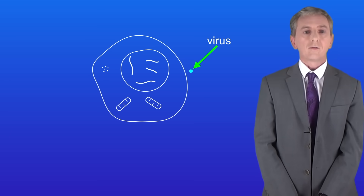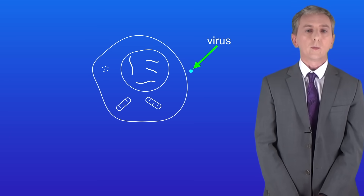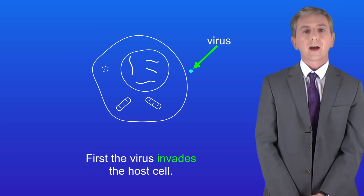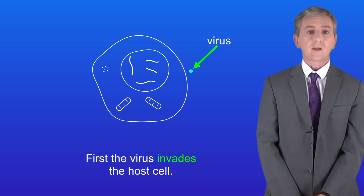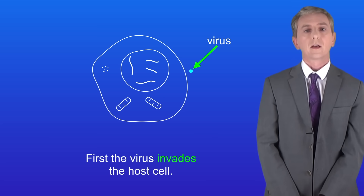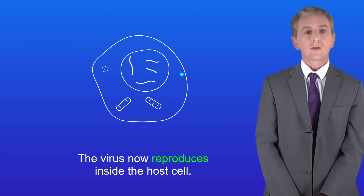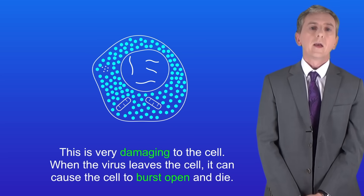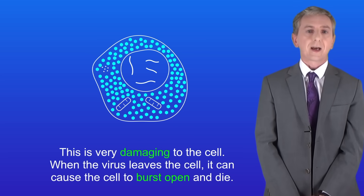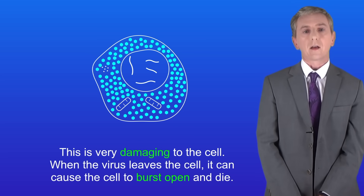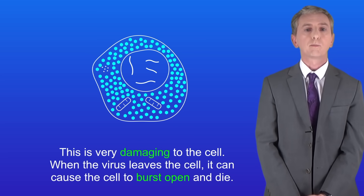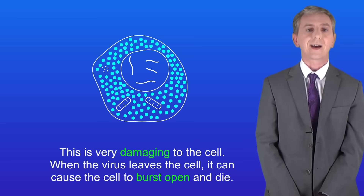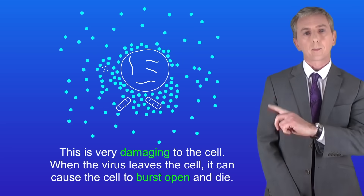This shows a virus and a human cell. First the virus invades the host cell, then the virus reproduces inside the host cell. This is very damaging to the cell — for example, when the virus leaves the cell it can cause the cell to burst open and die.